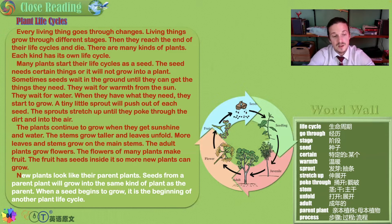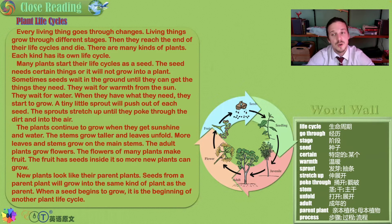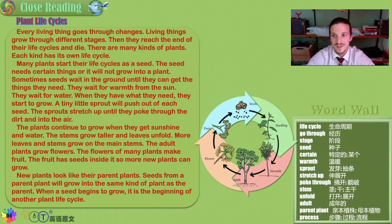New plants look like their parent plants — just like humans. Seeds from a parent plant will grow into the same kind of plant as the parent. An orange tree won't grow into a peach tree. When a seed begins to grow, it is the beginning of another plant life cycle. That's the beauty of life — it is a cycle: birth, death, regeneration, forever onwards.